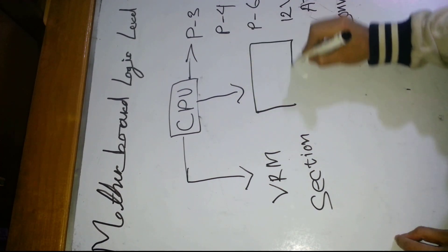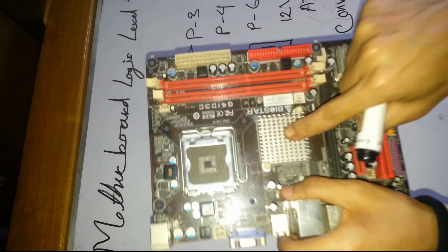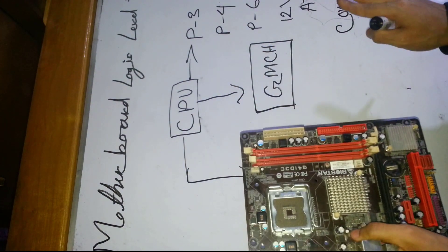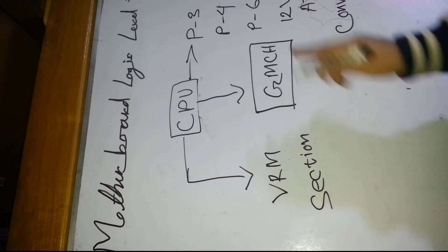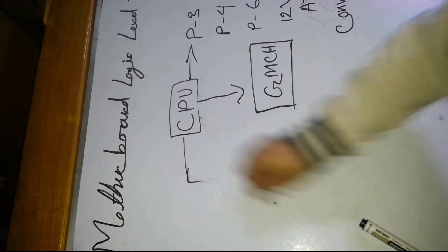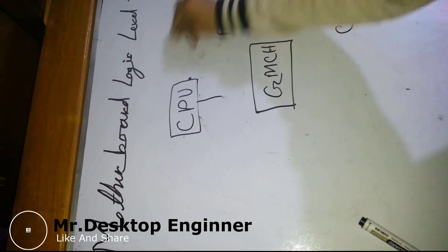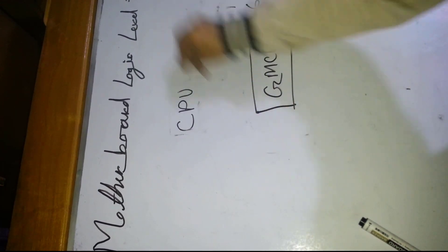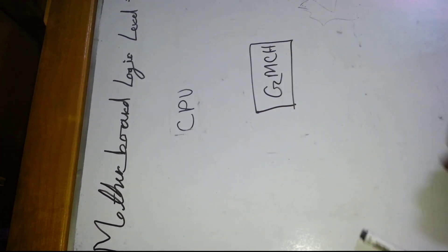The last CPU connection leads to GMCH - Graphics and Memory Controller Hub. This is the GMCH section. We will look at this section in a little bit of detail.